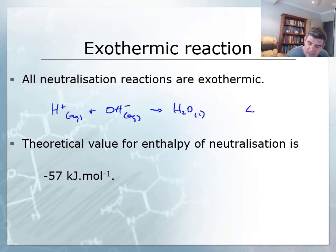In fact, the value of that particular delta H value is minus 57 kilojoules per mole of water that is produced. So I could update my calculation here to this one: minus 57 kilojoules per mole. Now, this is the theoretical value that we want to give you as the value of enthalpy of neutralization.